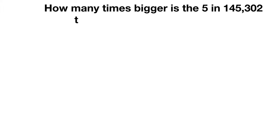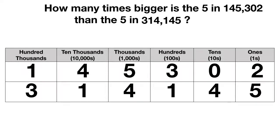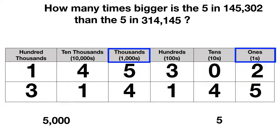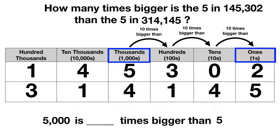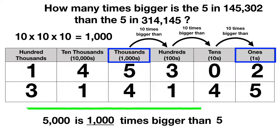Here's your last problem for today. How many times bigger is the 5 in 145,302 than the 5 in 314,145? On a place value chart, put the first number on top and the second number on the bottom. In our first number, the 5 is in the thousands place — it represents 5,000. In the second number, our 5 is in the ones place — it just represents 5. Thousands are 3 place values away from ones: thousands are 10 times bigger than hundreds, hundreds are 10 times bigger than tens, and tens are 10 times bigger than ones. So 10 times 10 times 10 equals 1,000 — meaning 5,000 is 1,000 times bigger than 5.